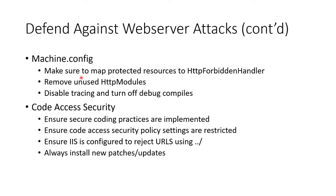For an Apache server, you can go to machine.config and map protected resources to the HTTP forbidden handler module. This basically disallows the web server from handing over protected sensitive resources in a web request. If you don't need certain functionalities, remove their related modules. Turn off tracing and turn off debug, so you don't inadvertently send error messages that you don't want people to read.